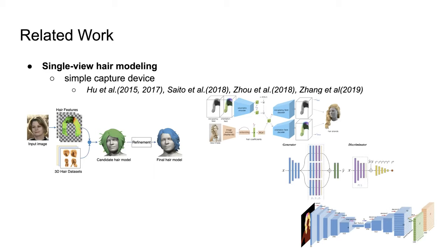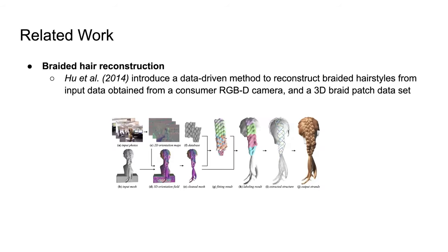Conversely, our method can reconstruct realistic 3D hair based on a single input hair image, even from the back view. Prior work introduced data-driven methods to reconstruct braided hairstyles from input data obtained from a consumer RGBD camera and a 3D braided patch dataset. However, the quality of the captured multiple hair images and 3D point clouds have a great impact on the effectiveness of the method and the quality of the reconstruction results. In addition, the scale of the example patches in a dataset also affects the accuracy of the reconstruction and the computation time for patch matching.